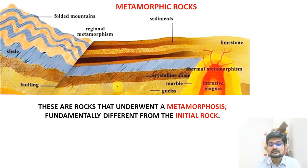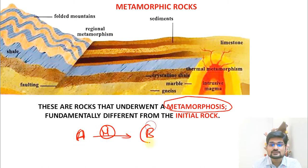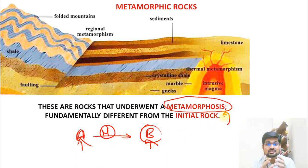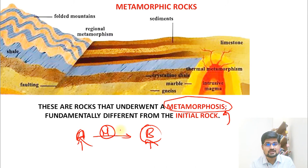Metamorphic rocks, as the word implies, are metamorphosed. The rocks undergoing this process are not the same — suppose rock A goes through metamorphosis and converts to rock B; A is completely different from B. The structure is entirely changed after metamorphosis through millions of years of intense heat and pressure, forming a third kind of rock called metamorphic rock.